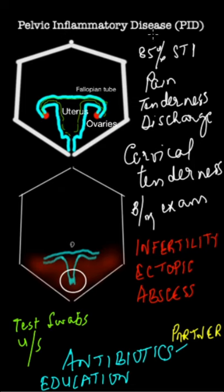Pelvic inflammatory disease is an infection of the upper female genital tract shown over here — the uterus, the fallopian tubes, and the ovaries. 85% of cases are secondary to sexually transmitted infections such as gonorrhea and chlamydia.